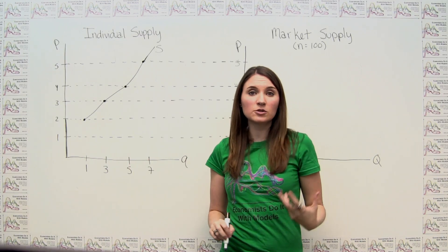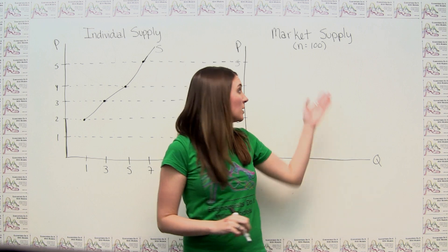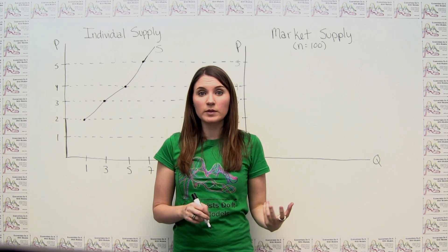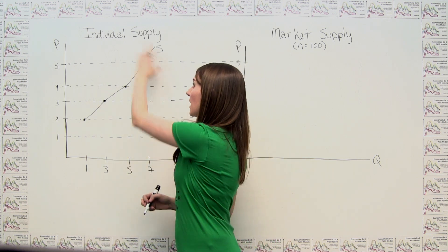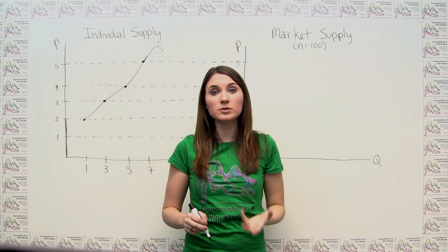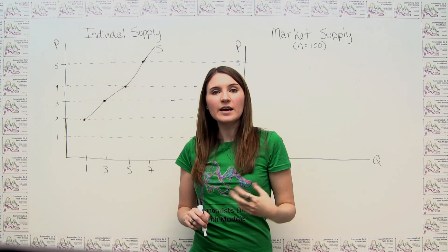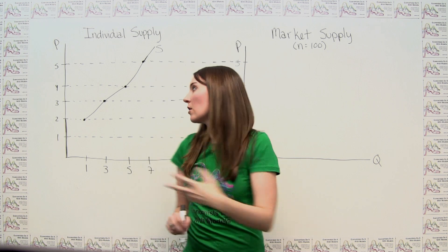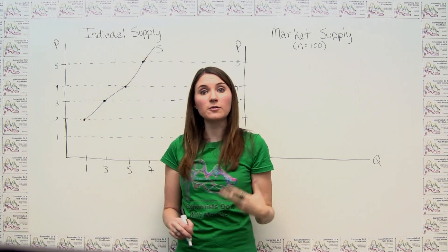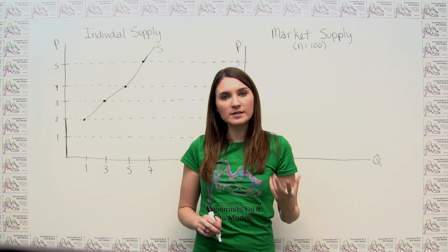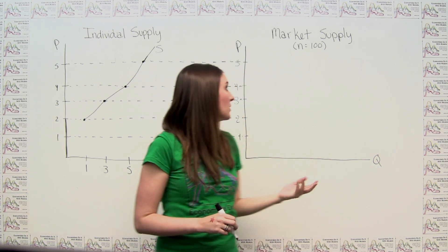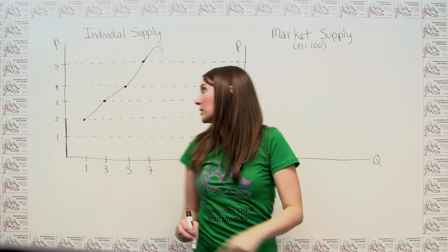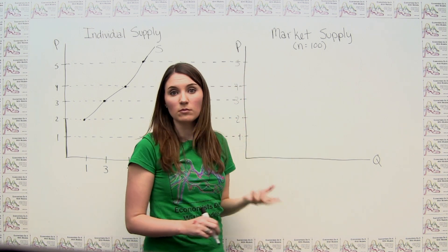As we said when we first introduced supply, market supply is just the sum of all the individual firm supplies that make up the market — an aggregation of all the individual supply curves. It might not always be the case that all firms in a market are identical with the same cost curves, but let's think about a simple case where that is true: a market with 100 firms, and how we go from individual supply to market supply.